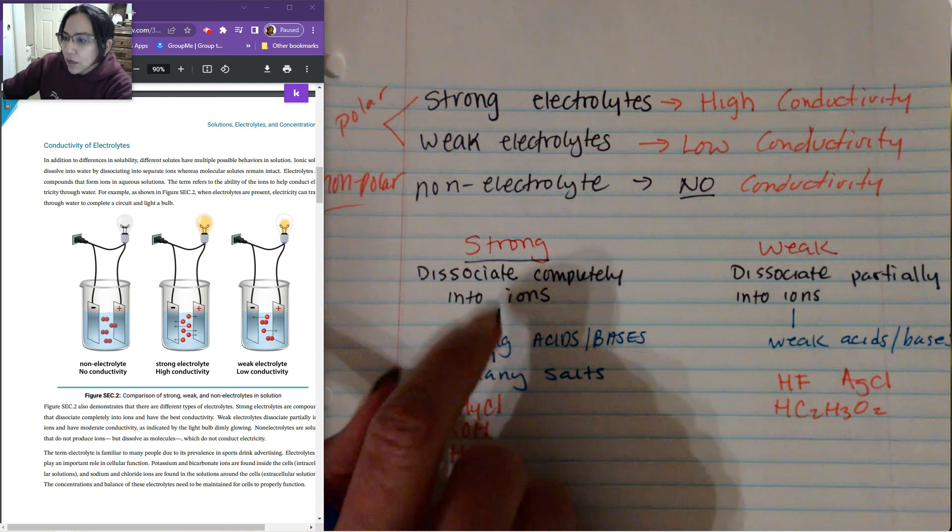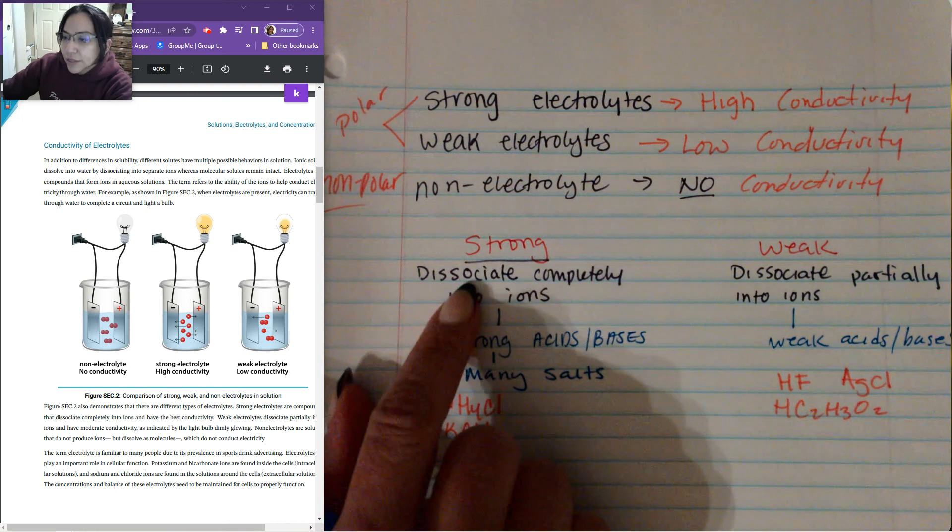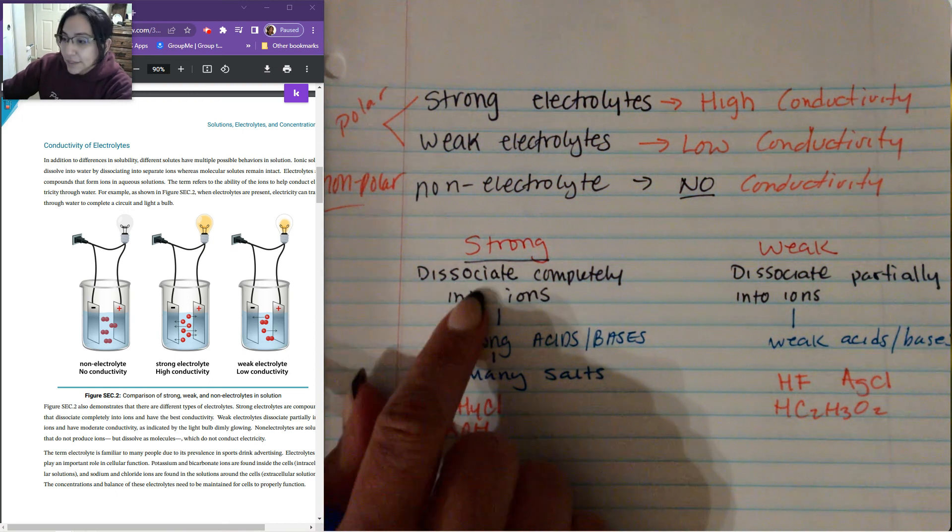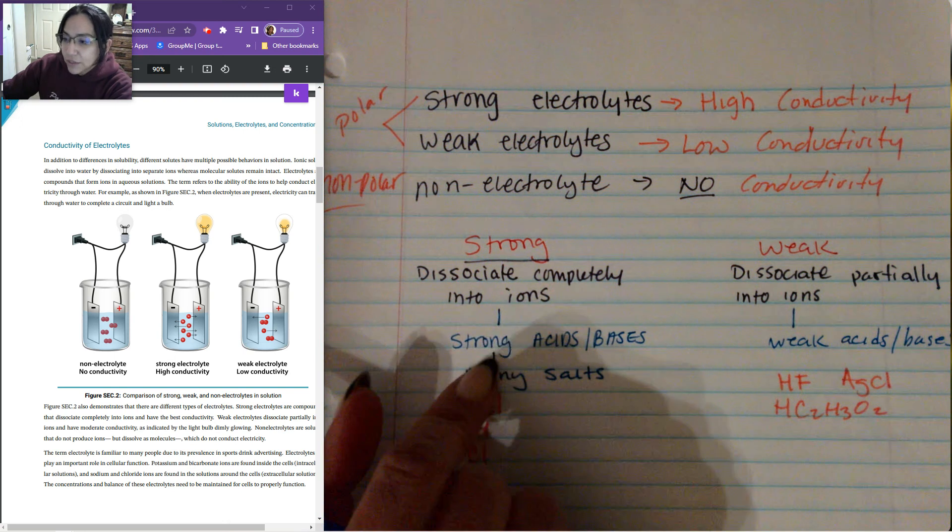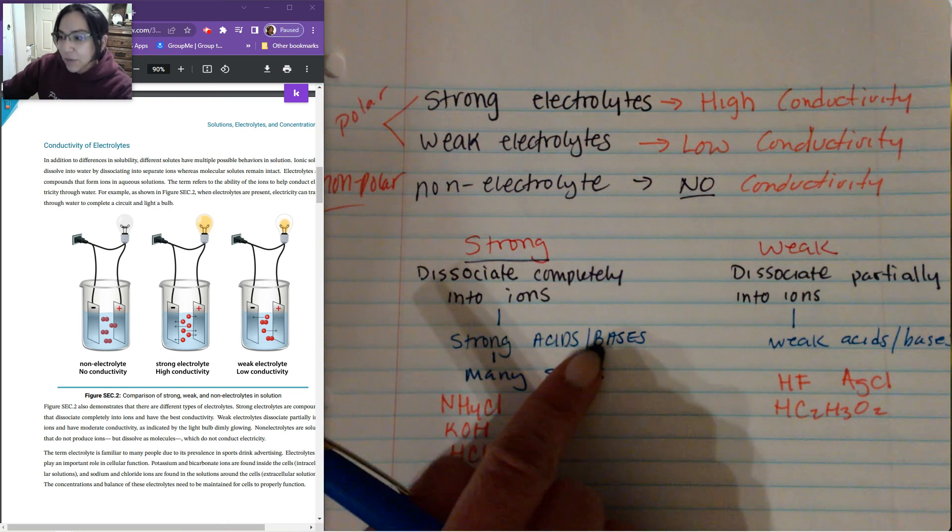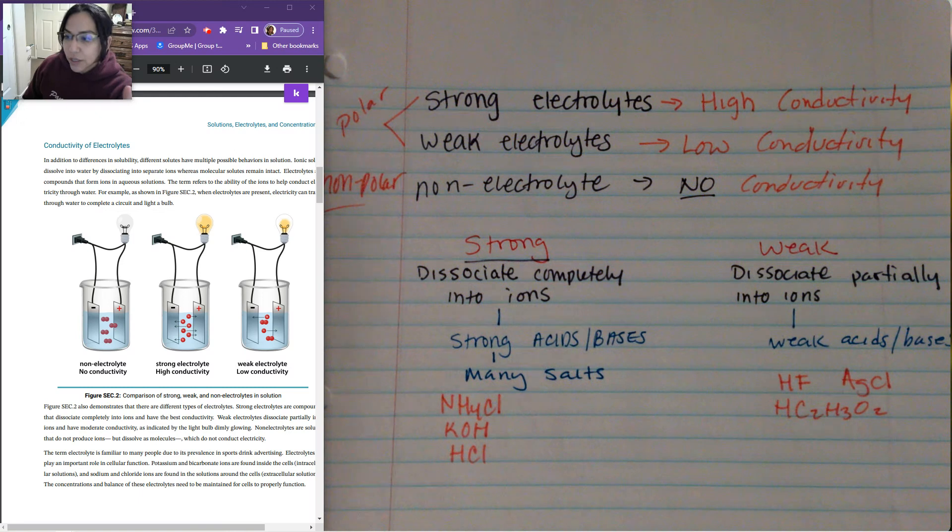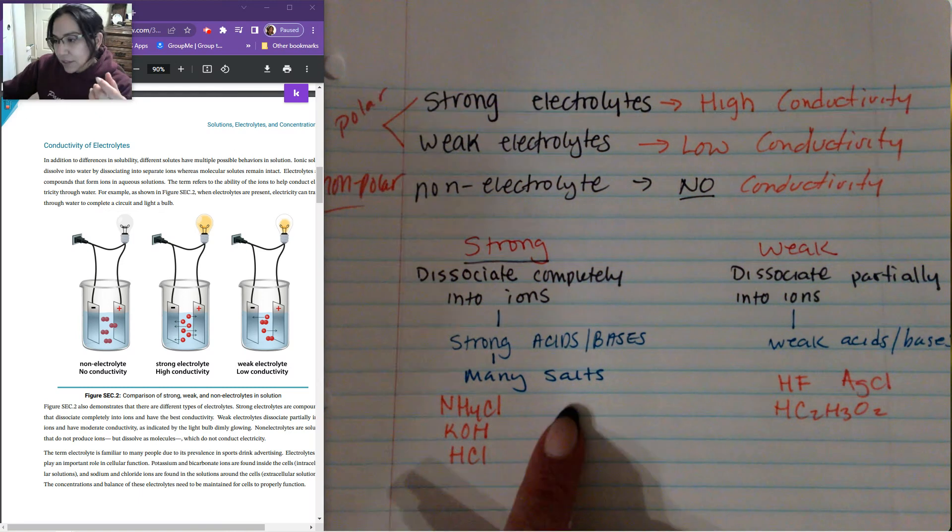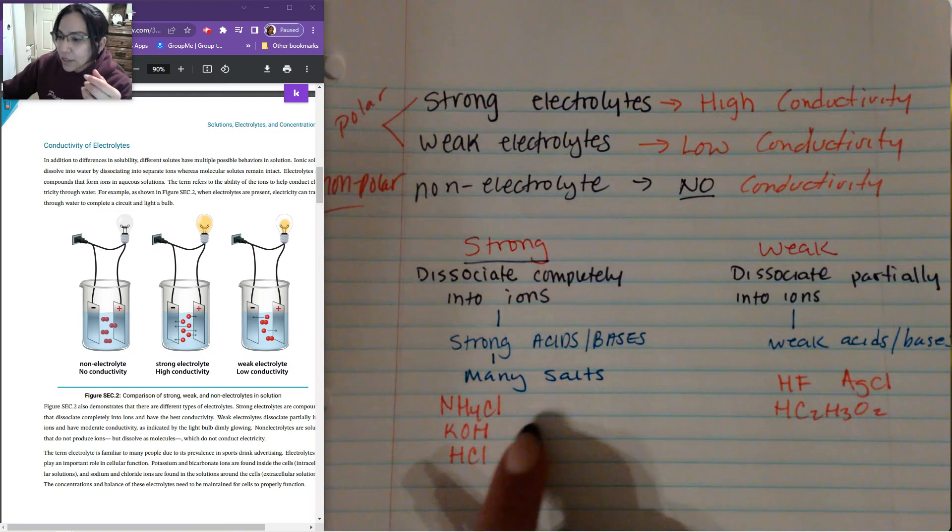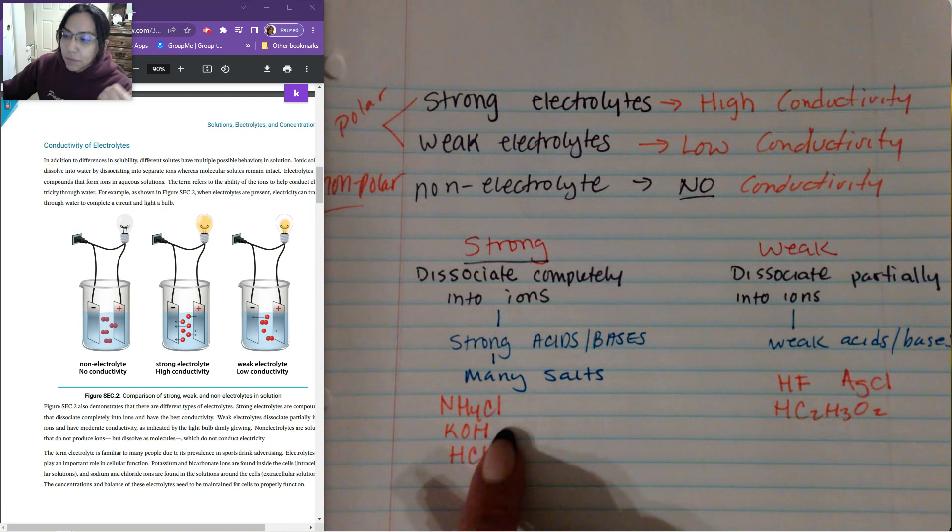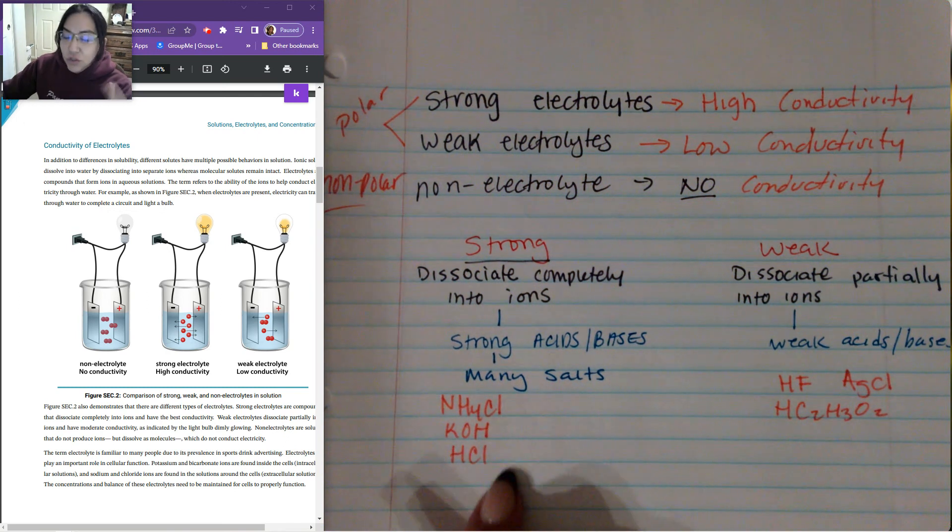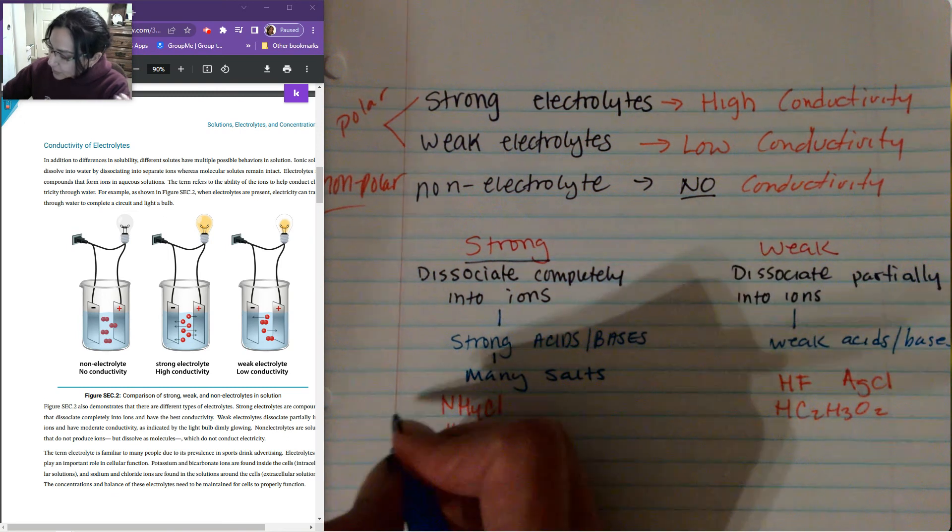So something that's strong, a strong electrolyte is going to be a compound that dissociates completely into ions. So your strong acids and your bases are considered strong electrolytes. Many salts are also considered strong electrolytes. So ammonium chloride, potassium hydroxide, hydrochloric acid. So these are strong compounds. These are just examples.